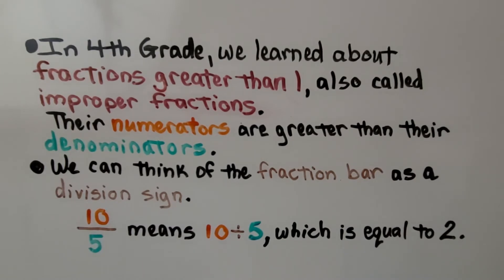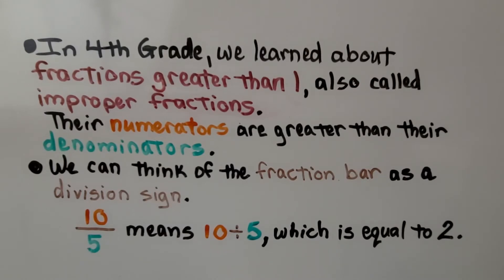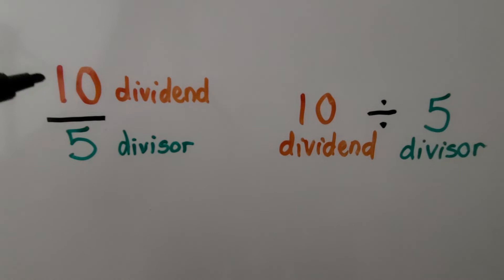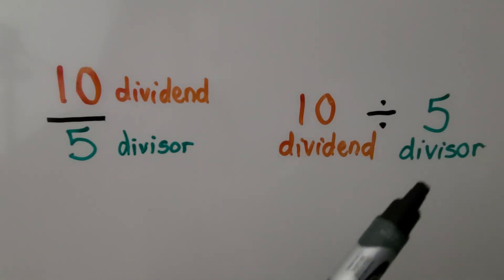In fourth grade, we learned about fractions greater than one, also called improper fractions. Do you remember those? Their numerators are greater than their denominators. We can think of the fraction bar as a division sign, as a vinculum. 10 fifths means 10 divided by 5, which is equal to 2. We can simplify 10 fifths to 2 whole. The 10 would be the dividend and the 5 would be the divisor. It's 10 divided by 5.